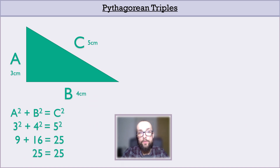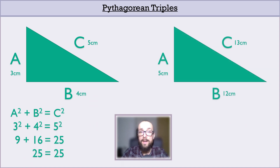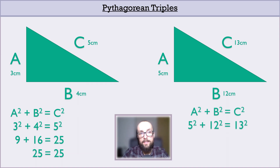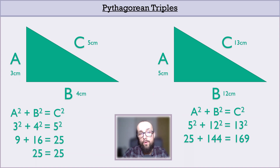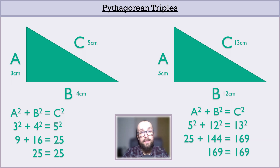This is also apparently true for the number set 5, 12, and 13. Plugging those values into the formula and resolving the squares: 5 squared is 25, 12 squared is 144, and 13 squared is 169. Does the maths check out? Adding 25 and 144 gives 169. So 5, 12, and 13 are indeed a Pythagorean triple.